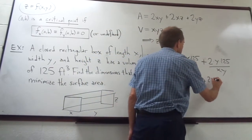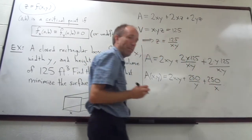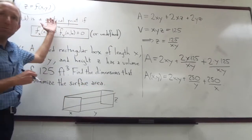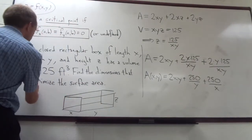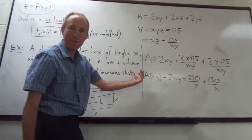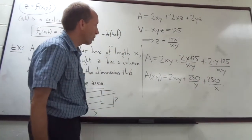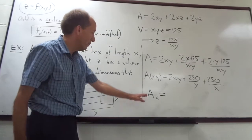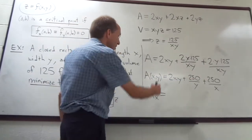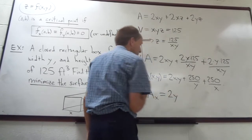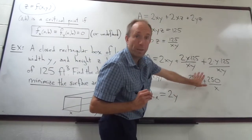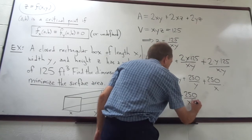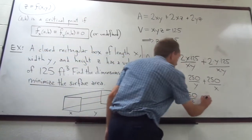So the area equation simplifies to A = 2xy + 250/y + 250/x. Now I need to find the critical points to minimize the surface area. I have a function of only two variables. The partial derivative with respect to x: A_x = 2y − 250/x², and I set that equal to zero. The partial derivative with respect to y: A_y = 2x − 250/y², and I set that equal to zero as well.